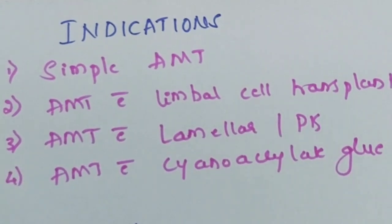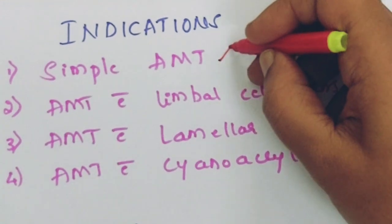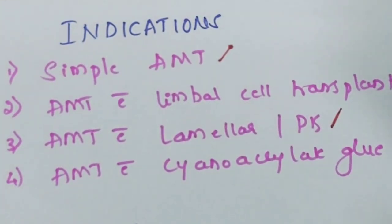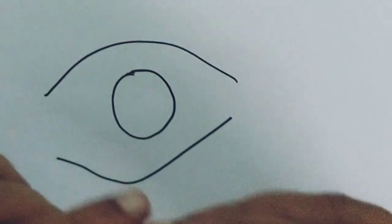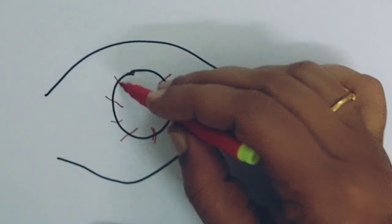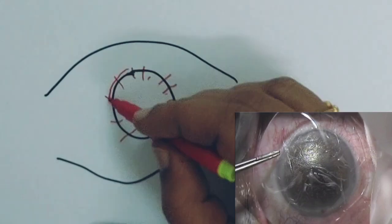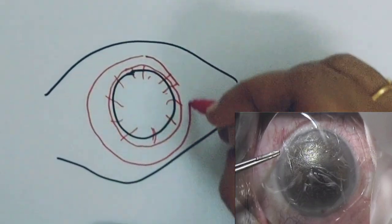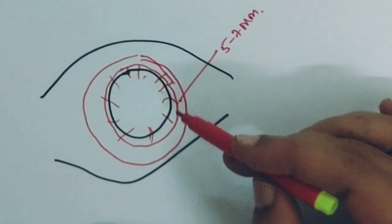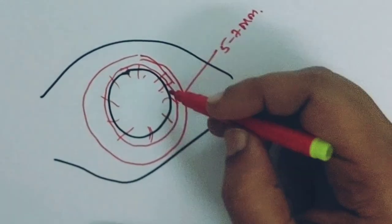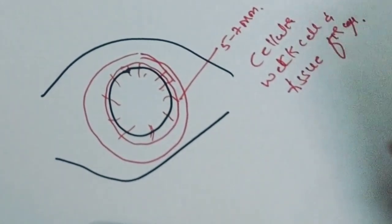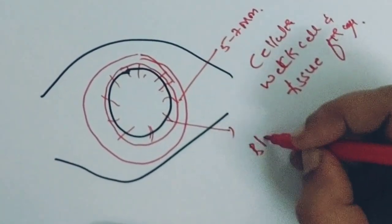Amniotic membrane can be used as simple AMT alone, with limbal stem cell transplantation, with lamellar or penetrating keratoplasty, or with cyanoacrylate glue. For the AMT procedure: the affected cornea and conjunctiva are identified, including any pannus over the cornea. A 360-degree peritomy is performed and the conjunctiva is exposed for 5 to 7 mm around the limbus. Any abnormal vascularization — superficial or deep — is removed: superficial using a cellulose sponge or forceps, and deep vascularization by blunt dissection.